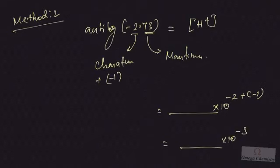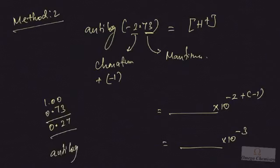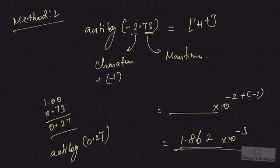The mantissa part should be subtracted from 1: 1.00 minus 0.73 gives 0.27. We then take the antilog of 0.27 from the antilog table, which gives 1862. Since we have a zero before the decimal, we place the decimal point after the first digit, giving 1.862. So the antilog of minus 2.73 equals 1.862 × 10⁻³.